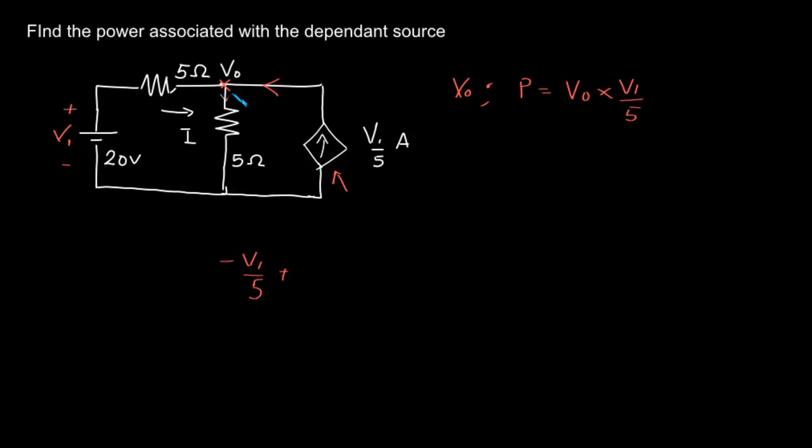Now this current through 5 ohm will be V0 by 5. Now this current will be V0 minus 20 by 5. This is equal to 0. This is the KCL equation.